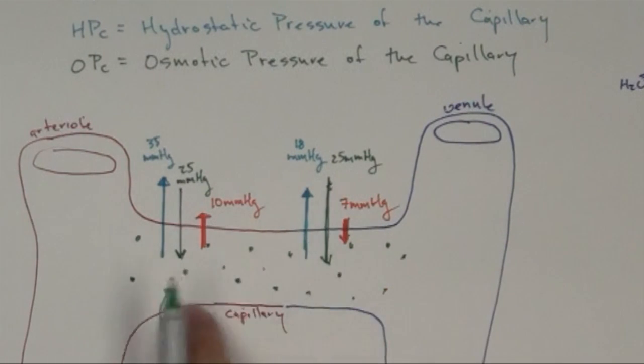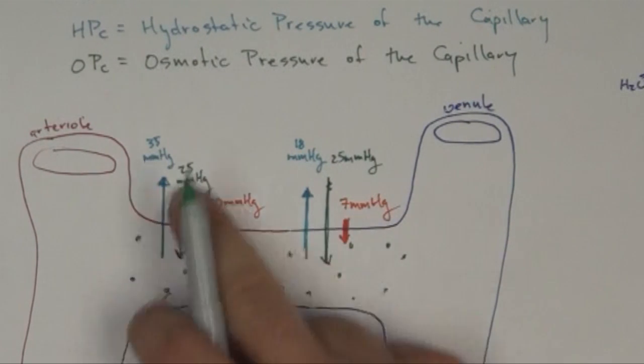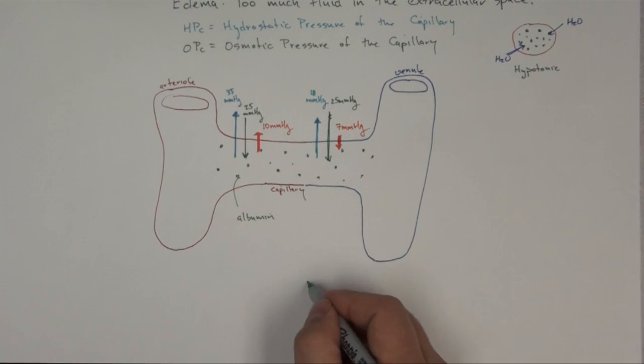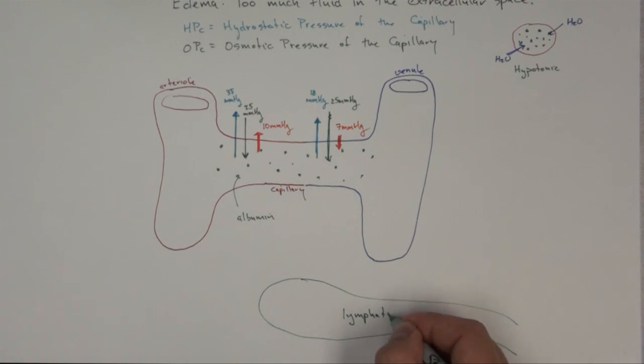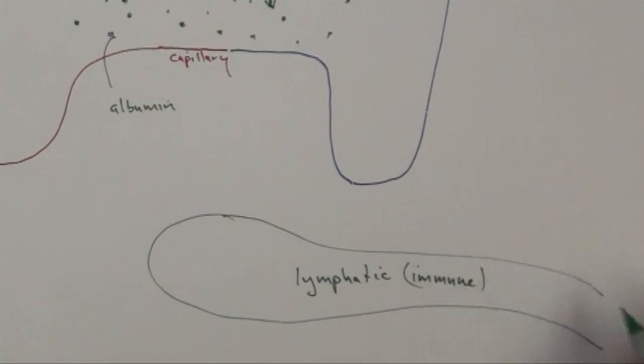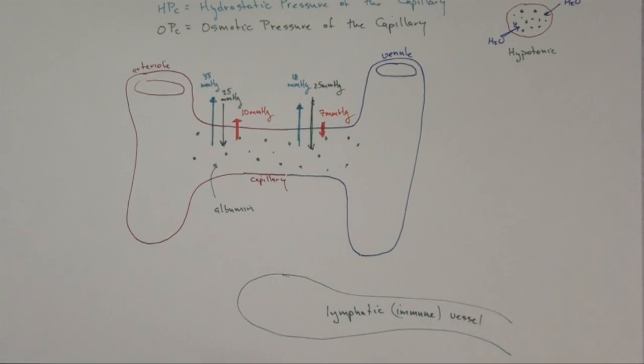One of the things you might notice though, or ask, where's that extra fluid go? Because I'm pushing out more than I'm drawing back in. And this is essentially the purpose of the lymphatic system. It's also the home to the immune system, as much as the immune system can have a home. So it's the lymphatic vessel. This extra fluid will enter the lymphatic vessel.